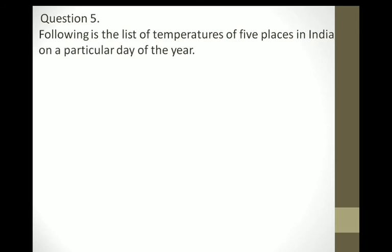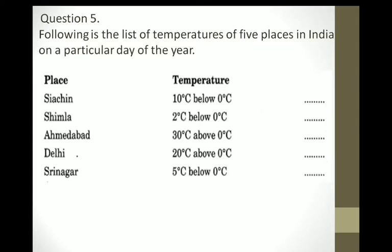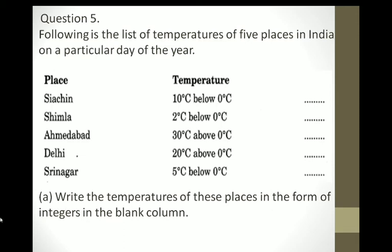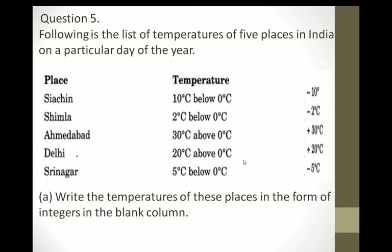Question number 5: The following is a list of temperatures of 5 places in India on a particular day. Siachin: 10 degrees below 0°C = negative 10. Simbhala: 2 degrees below 0°C = negative 2. Ahmedabad: 30 degrees above 0°C = positive 30. Delhi: 20 degrees above 0°C = positive 20. Srinagar: 5 degrees below 0°C = negative 5.